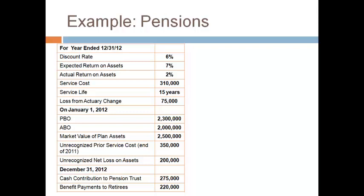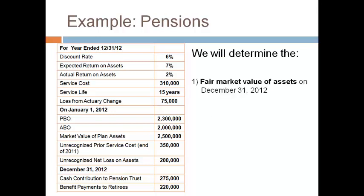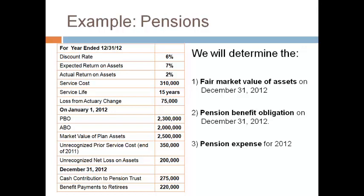Unrecognized means not yet included in pension expense, and it is in OCI. The company contributions and payments to retirees are also needed. We will use this information to walk forward the fair market value of assets and the PBO from the beginning of the year to the end of the year, and compute the pension expense.